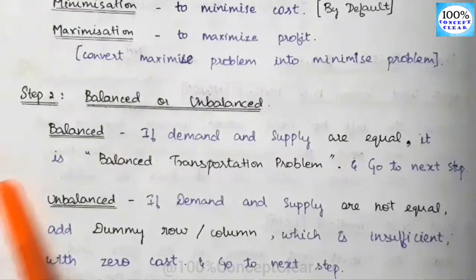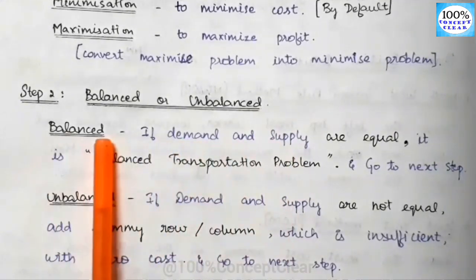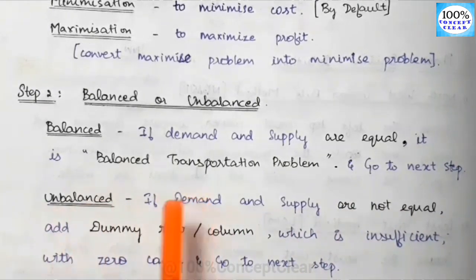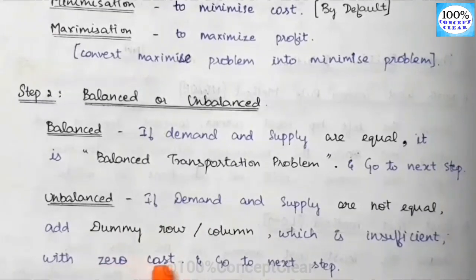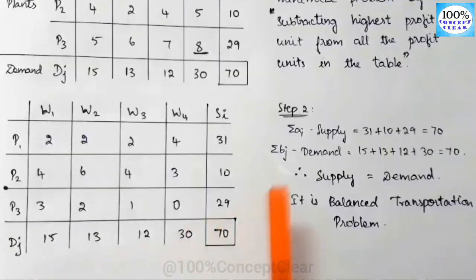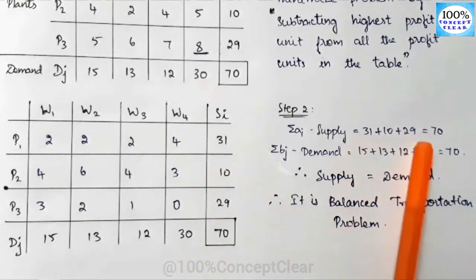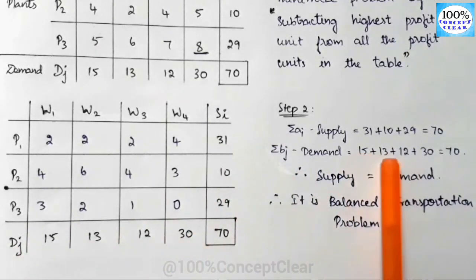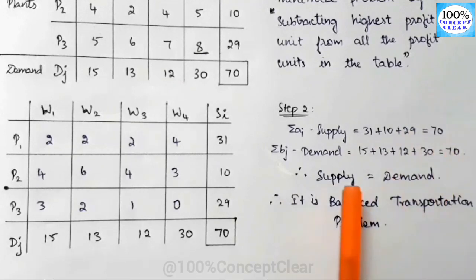Step 2: Check if the problem is balanced or unbalanced. If demand and supply are equal it is a balanced problem; if not, it is unbalanced and we add a dummy row or column with cost 0. Summation of supply: 31 + 10 + 29 = 70. Summation of demand: 15 + 13 + 12 + 30 = 70. Since supply equals demand, it is a balanced transportation problem.